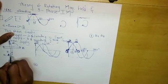Here we are dealing with three phase supply given to three phase winding. These windings are displaced by 120 degrees apart from each other. This is the first winding, this is second, and this is the third winding. The angle between them is 120 degrees. This flux is of the first winding, this is of the second, and this is of the third winding.